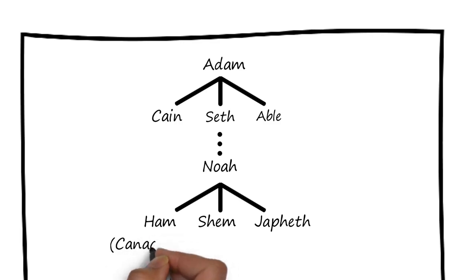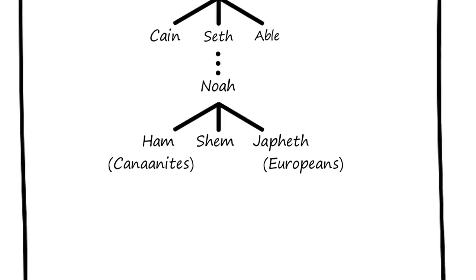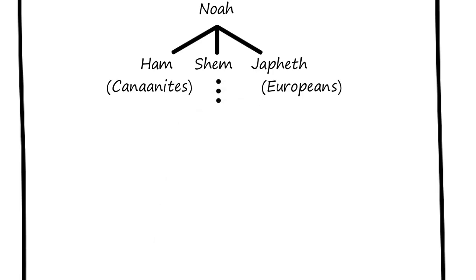The Canaanites were descendants of Ham, and the Europeans were descendants of Japheth. But the Bible follows Shem. Again, let's use three dots to indicate several more generations before our next main character, Abraham.